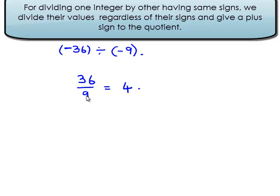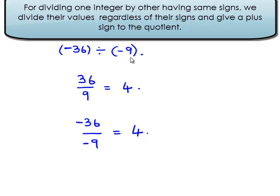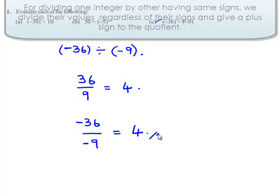That is, negative 36 divided by negative 9 gives plus 4. Therefore, negative 36 divided by negative 9 is equal to positive 4.